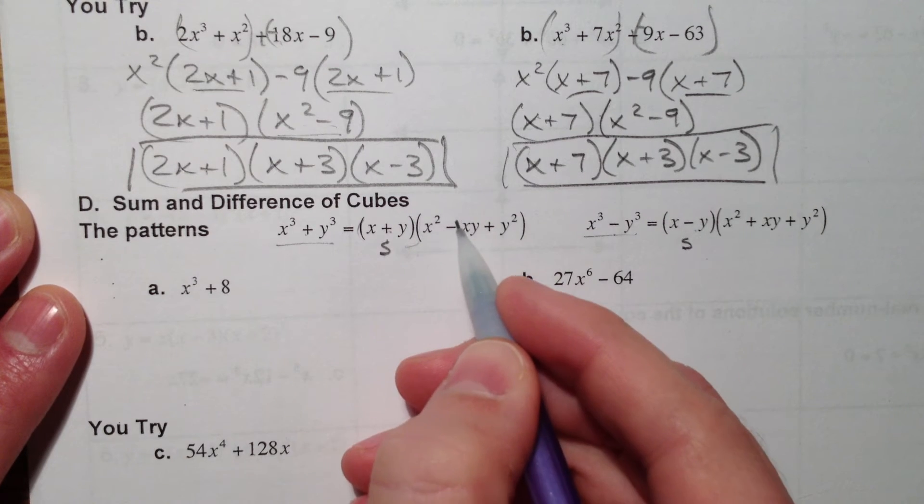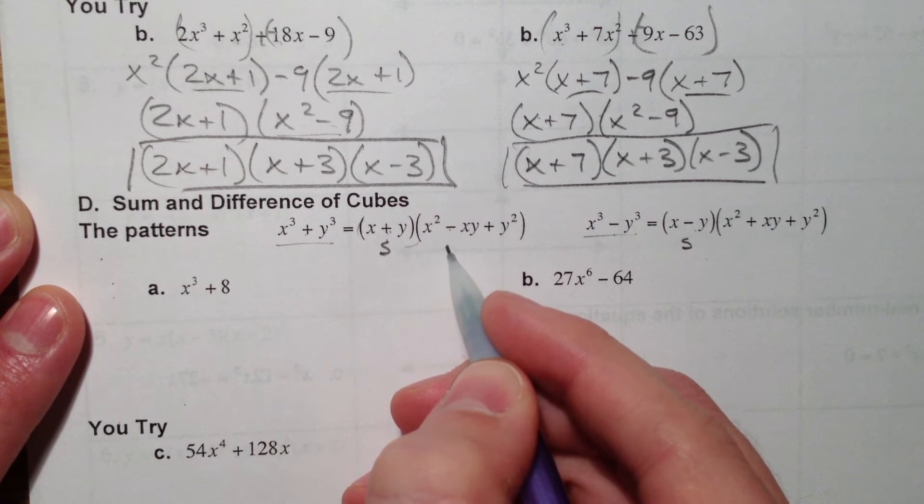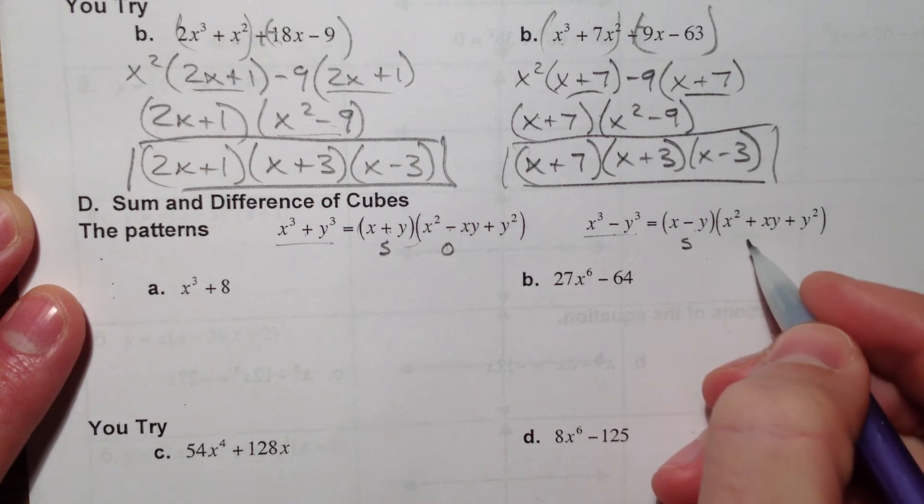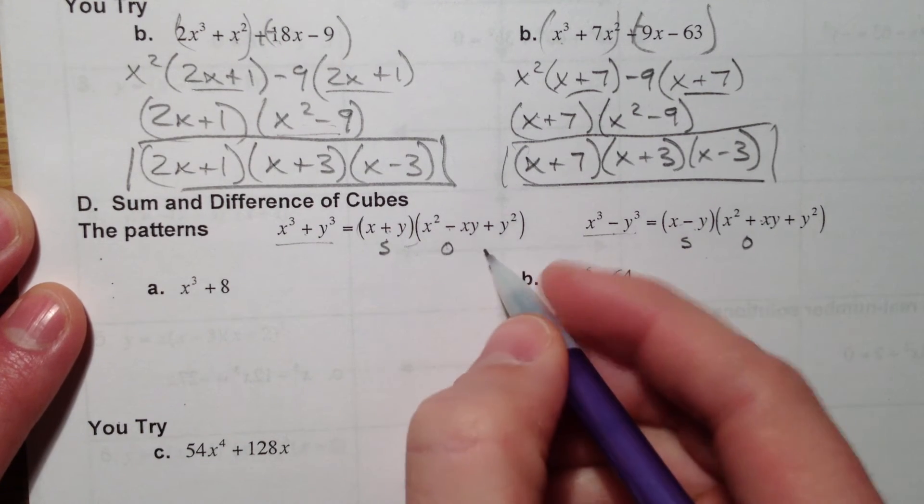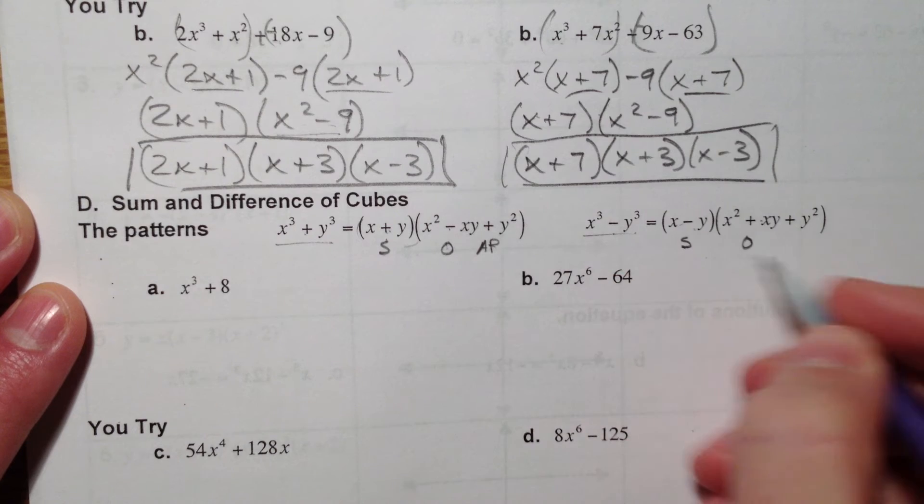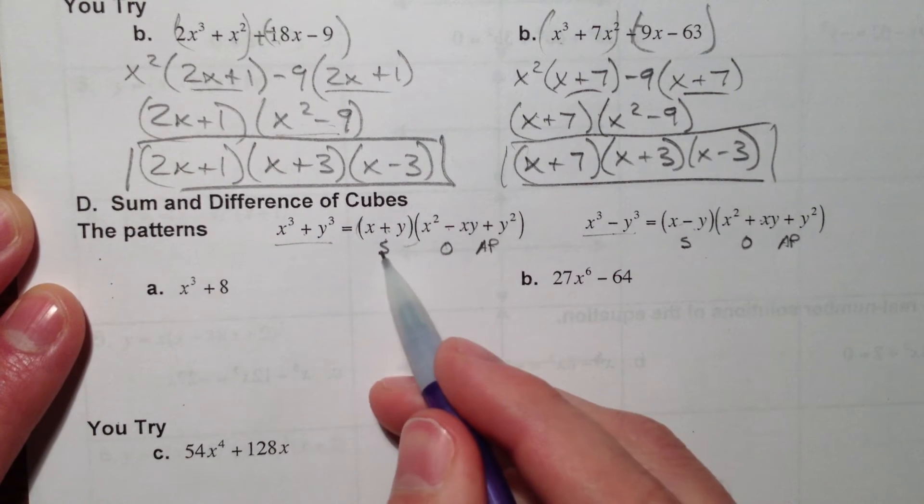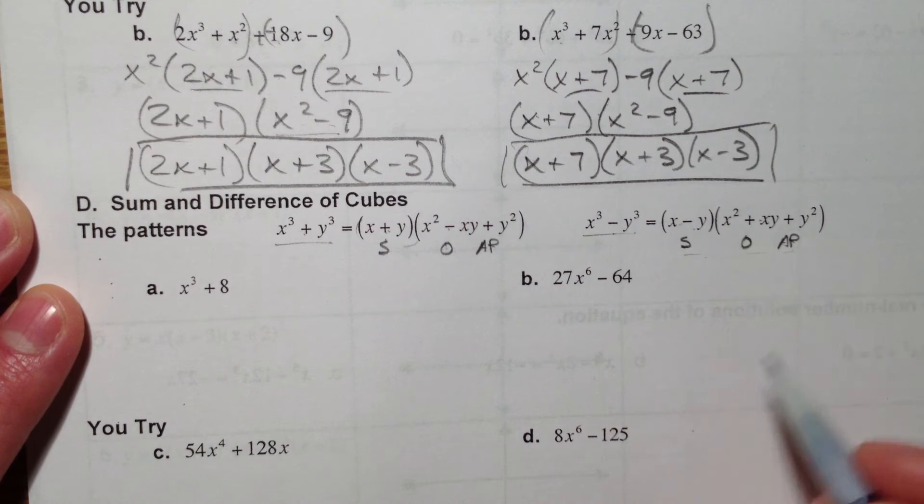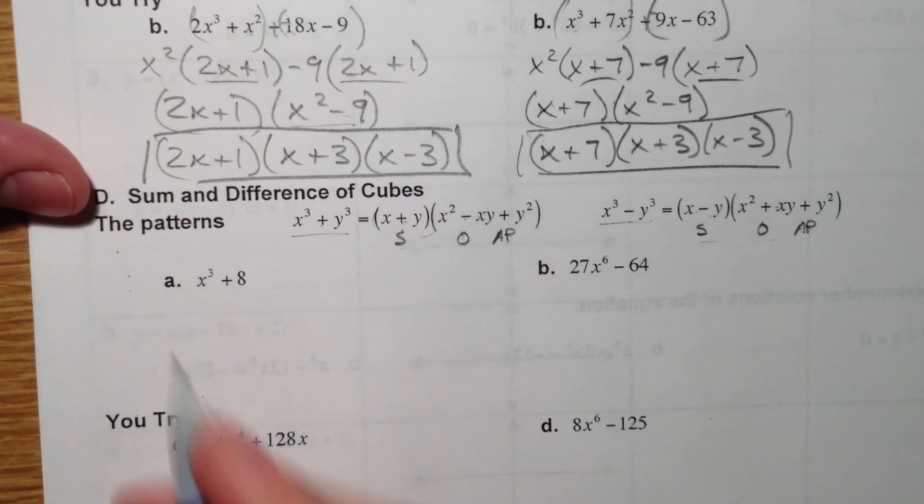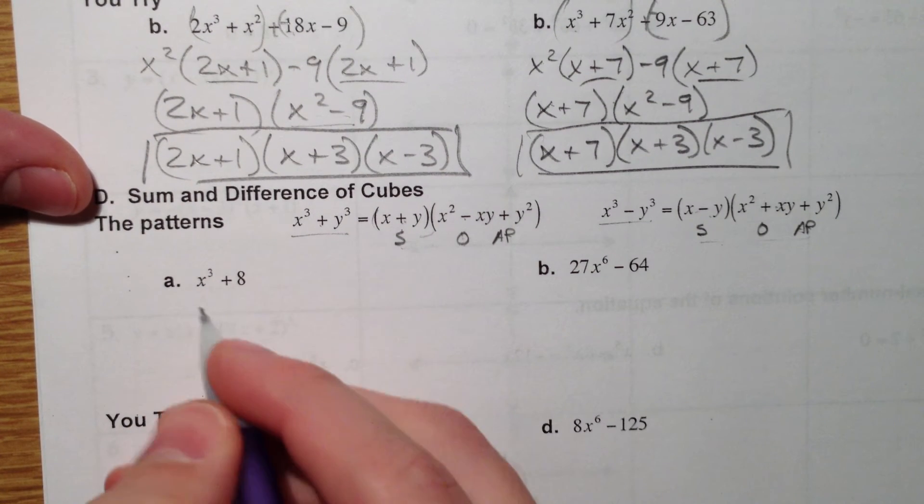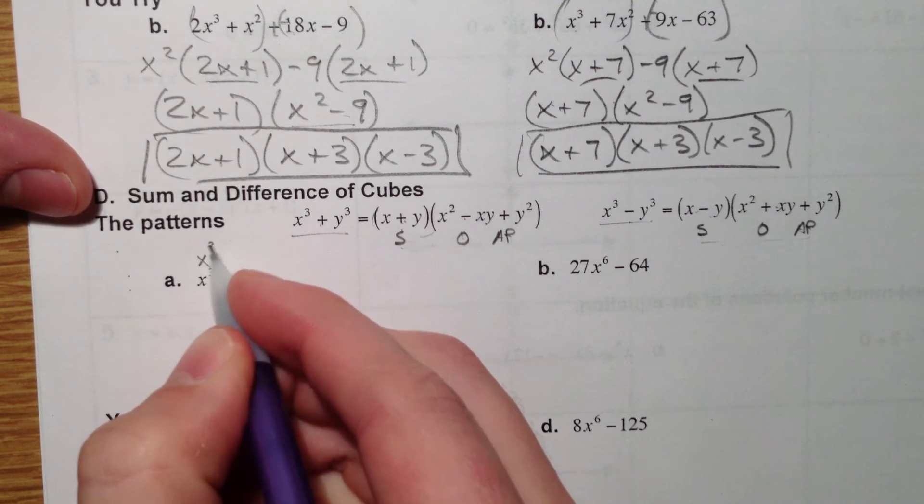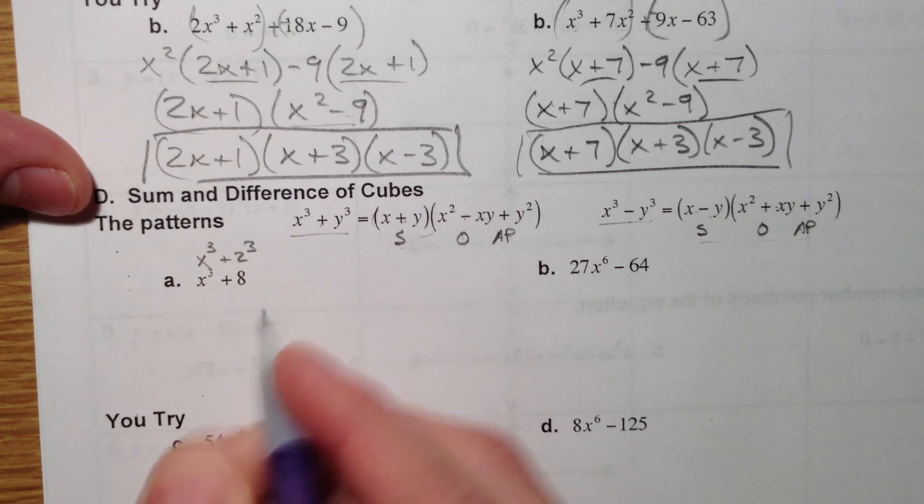So this one's the same. If this is a plus, this one's the opposite. And this one's the opposite. And then this one is always positive. Always positive. So somebody taught me SOAP - same, opposite, always positive, as a way to remember it.